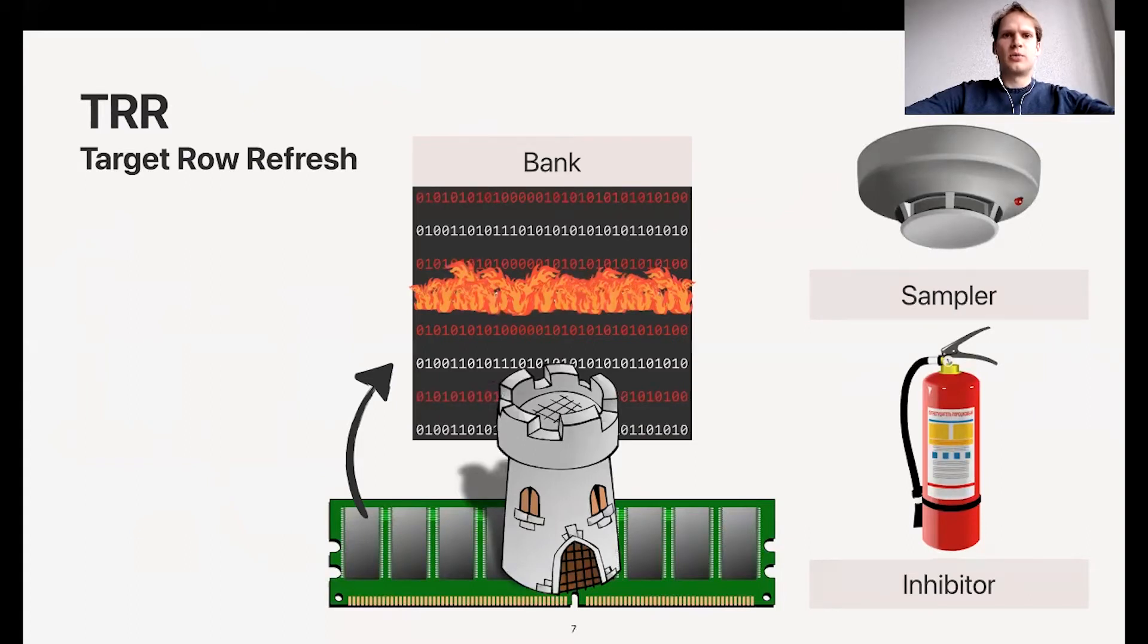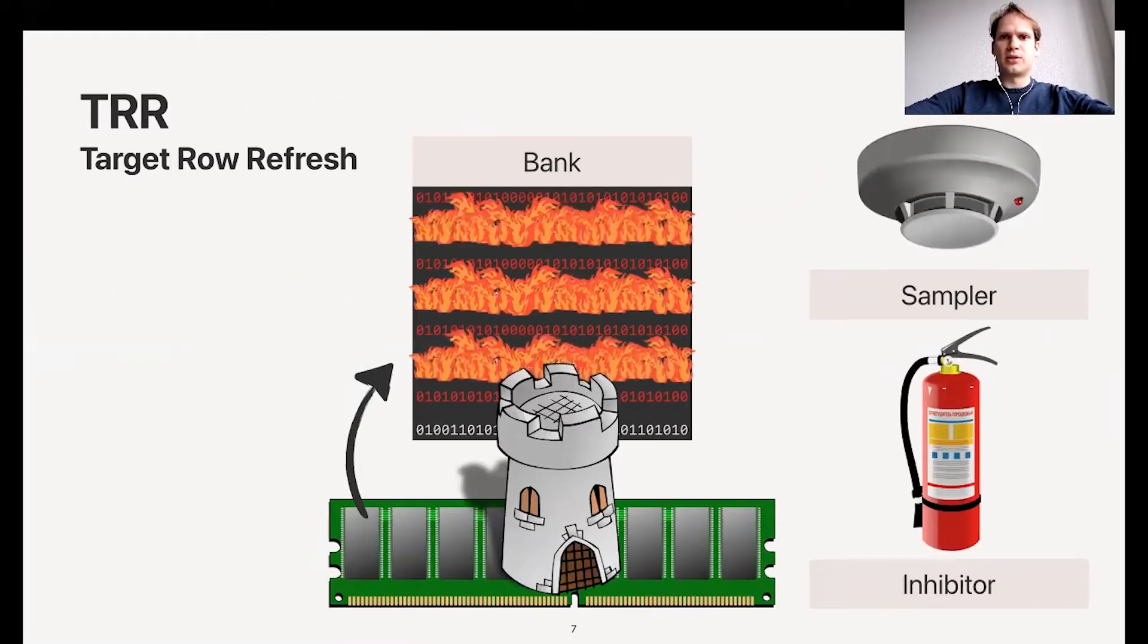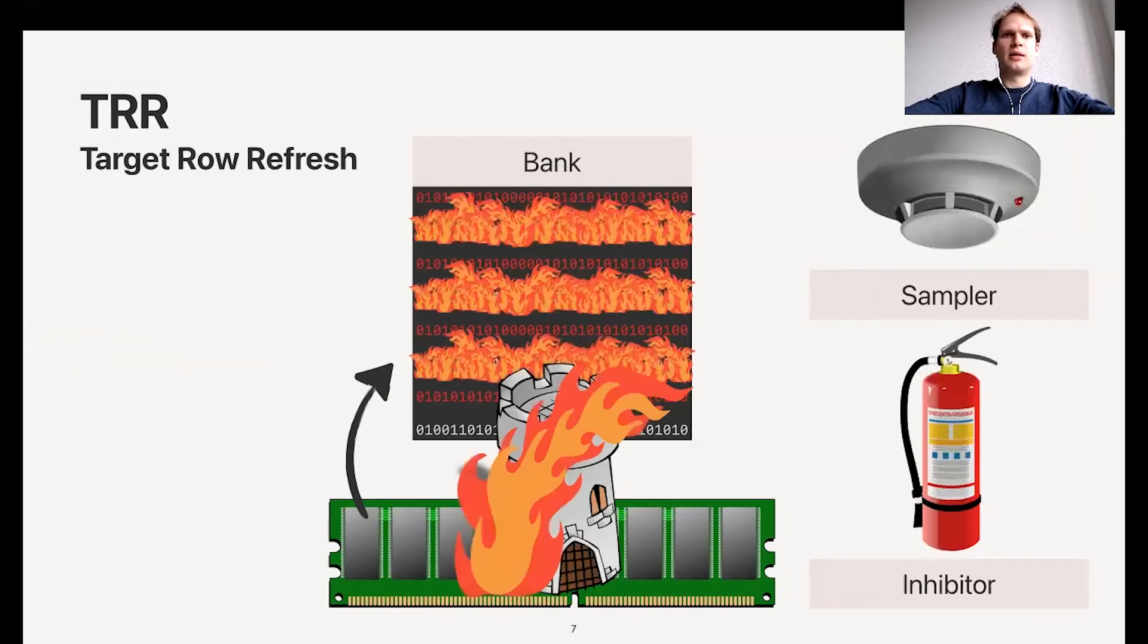To bypass it, what we do is activate more rows than the sampler or the inhibitor can keep track of. We're basically starting more fires and now we overwhelm the mitigation.